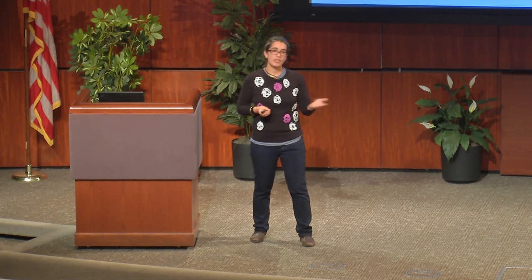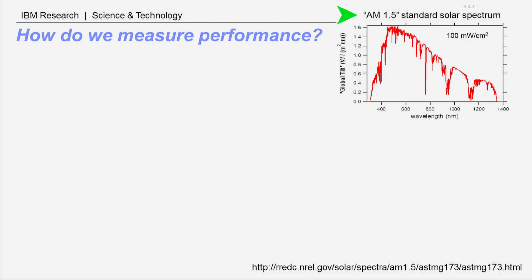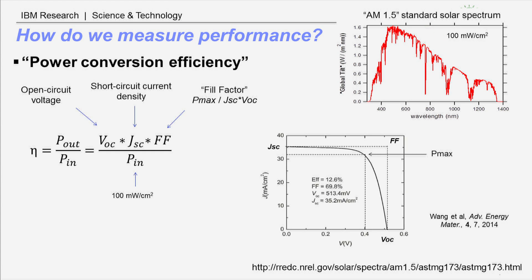To measure performance, we need a standardized amount of light shone on our photovoltaic device. I'm showing the AM 1.5 spectrum — the standardized solar spectrum representing the optical power reaching Earth from the sun at every wavelength, with about 100 milliwatts per centimeter squared of optical power incident on our device. We apply a varying voltage and measure the current response to extract parameters: short-circuit current density, open-circuit voltage, and fill factor. Multiplying those parameters together gives output power, which we compare to the input optical power to get power conversion efficiency.